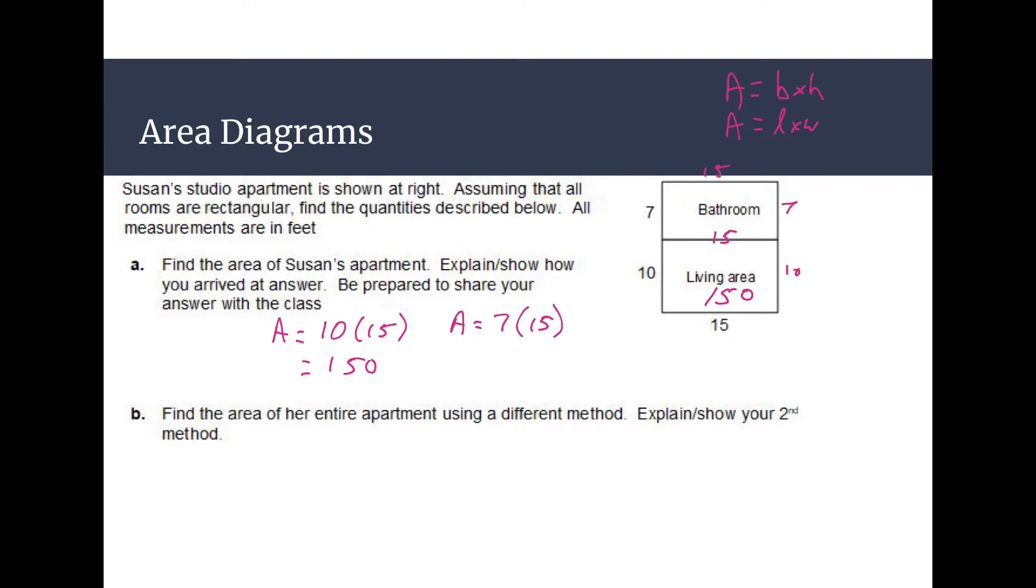As well as this also being 15. This being 7, that being 10, just because that is how rectangles work. So then that would be 105. And then if I know that the living area is 150 and the bathroom is 105, then I can simply just add those two answers together to get a total of 255 feet squared. It does say measurements are in feet. There's the answer.